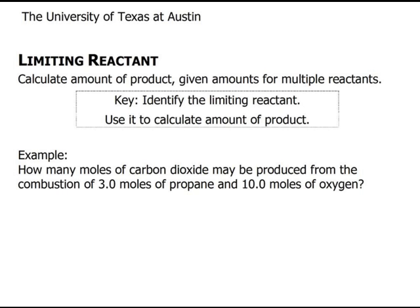The key to solving a limiting reactant problem is first identifying it, then also to identify the limiting reactant itself, and use that to calculate the amount of product.